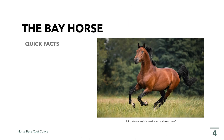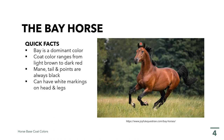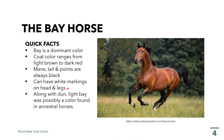Some quick facts about the bay horse: bay is considered to be a dominant color. The coat color ranges from light brown to dark red. The mane, the tail, and the points are always black in color. When we say points, this refers to the mane, the tail, the limbs, and the edges of the ear — and they are always black in color. Bay horses can have white markings on the head and legs. Along with dun, light bay was possibly a color found in ancestral horses.